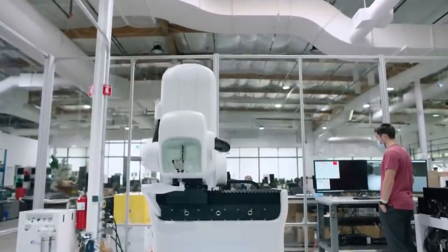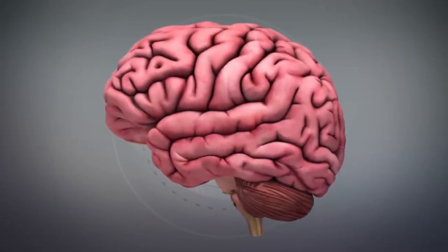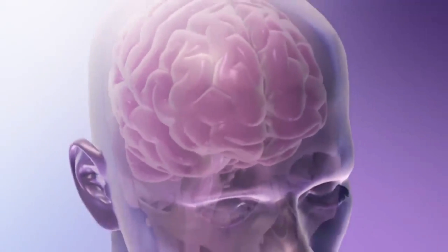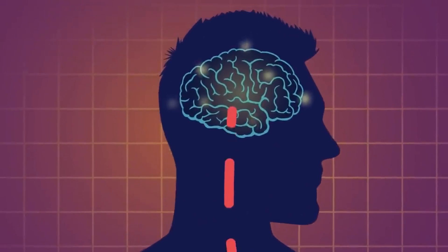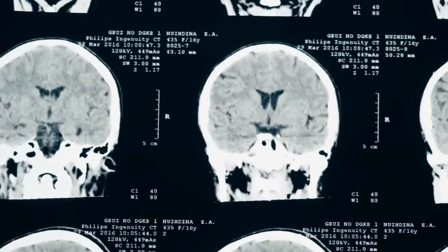Or to control machines or computers with just the power of thought? While these abilities might seem like something out of a science fiction movie, Neuralink's technology could make them a reality. The company founded by Elon Musk is developing a brain machine interface that will allow the human brain to communicate directly with computers.